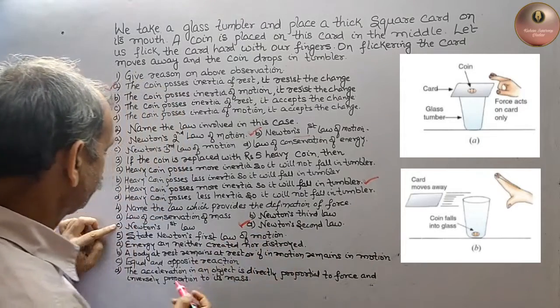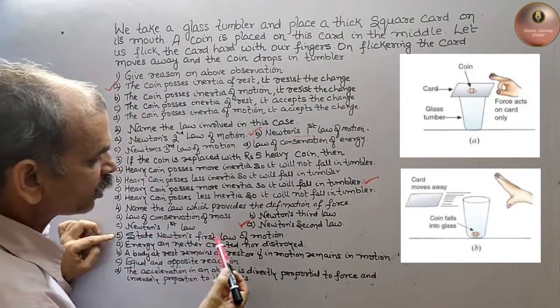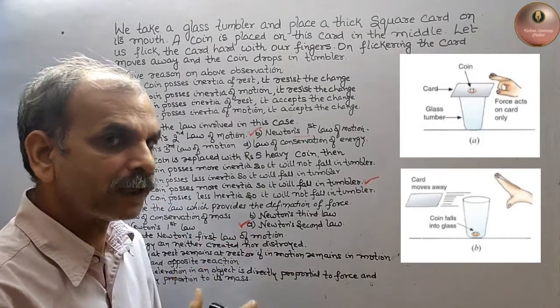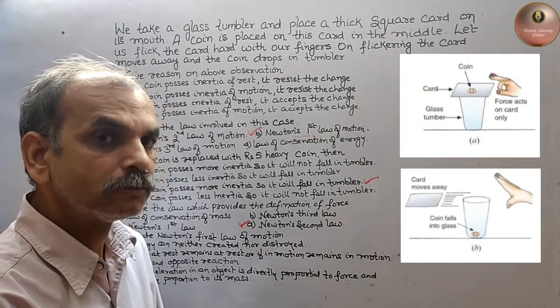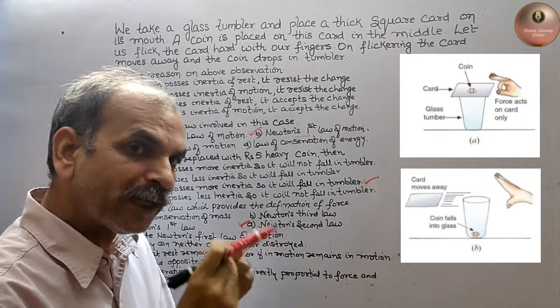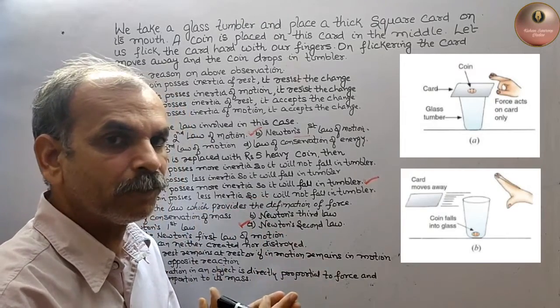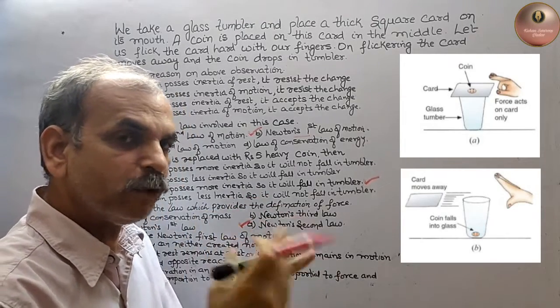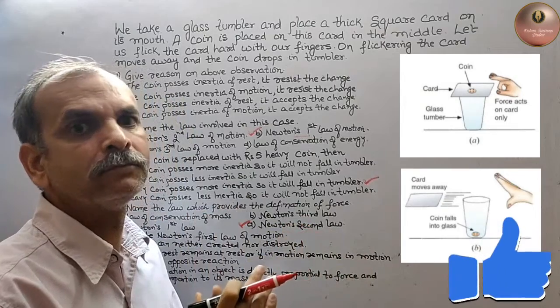Now next, state Newton's first law of motion. So in first law of motion, what happens? An object at rest stays at rest, and which is moving will continue to move. That is first law where inertia is involved.